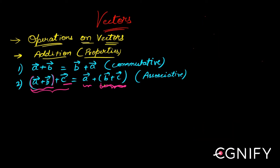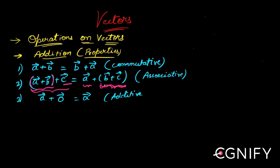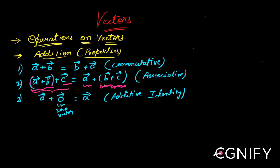The next property is slightly more simple — additive identity. If you add a zero vector to a vector, it will remain the same. This is called additive identity, and you've seen this in normal algebra: adding zero to a number leaves it unchanged. Similarly here, you add a zero vector — a vector with zero magnitude and arbitrary direction, basically localized to a point — and you get the same vector back as your result.